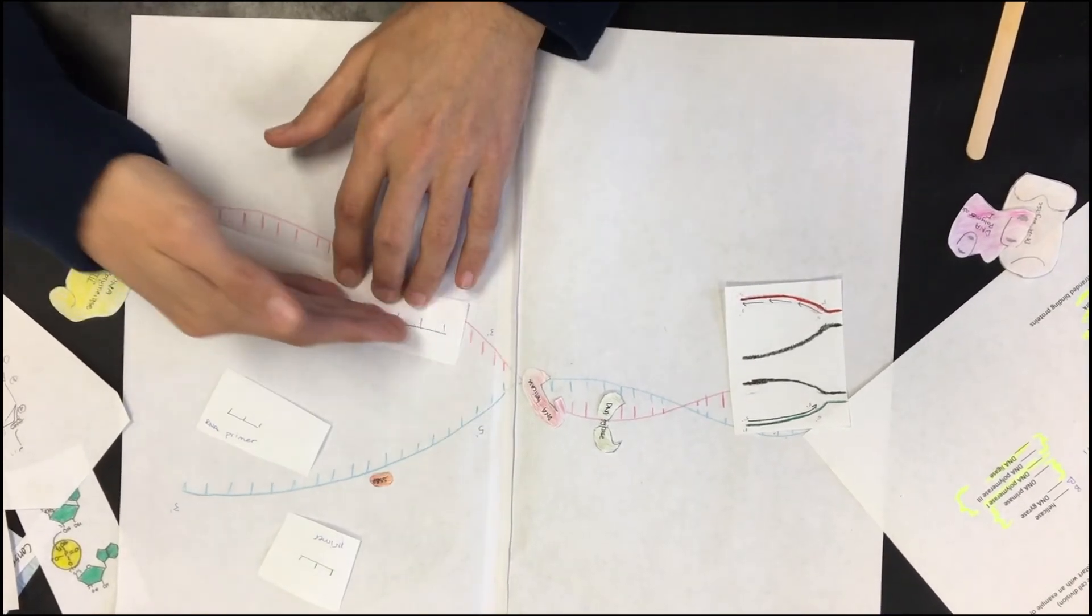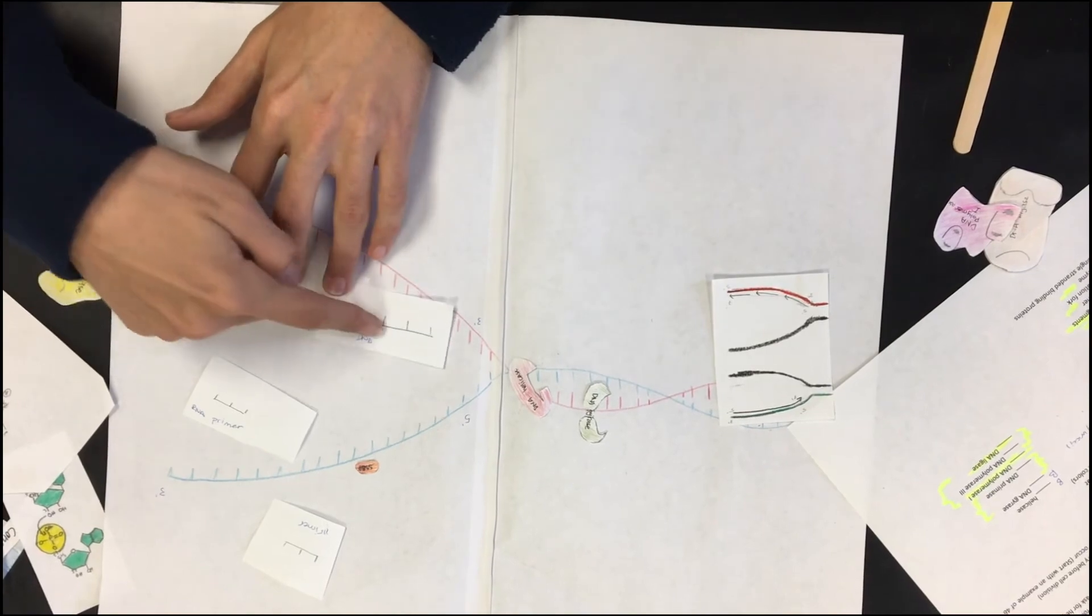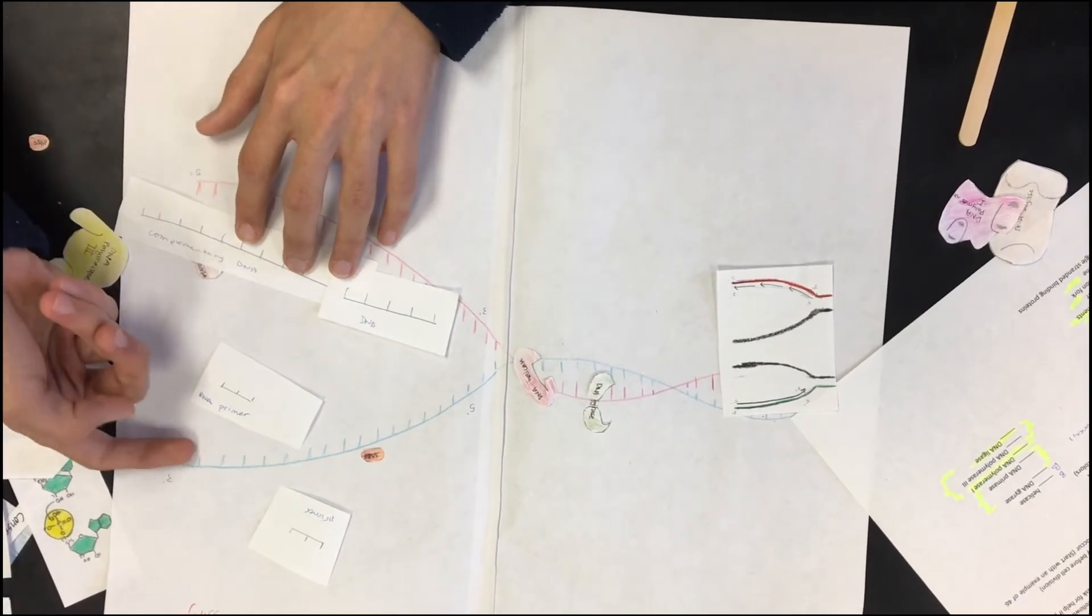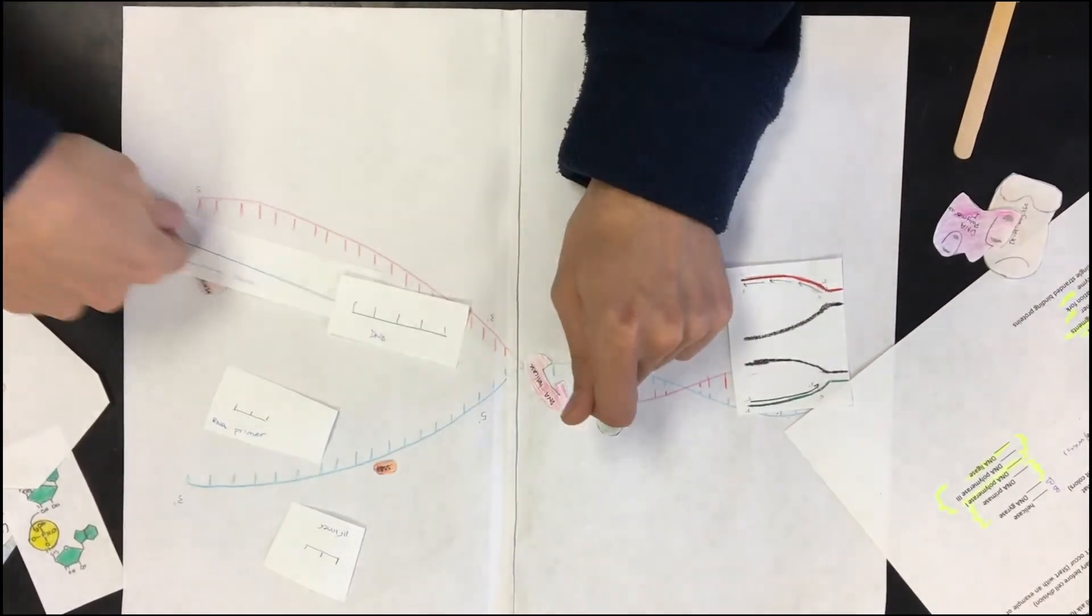The main difference here is that this was discontinuous adding because it has to move in that 5' to 3' direction. Here, it can just move continuously and as it unzips, it can just continuously move. Whereas, here, it can only go like that.